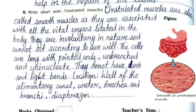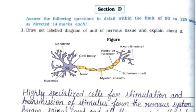Question 6: Write a short note on unstriated muscles. Unstriated muscles, also called smooth muscles, are associated with all the vital organs in the body. They are involuntary and cannot act according to our will. The cells are long with pointed ends, unbranched, and uninucleate. They do not have dark and light bands. Location: wall of the alimentary canal, ureter, trachea, bronchi, and diaphragm.